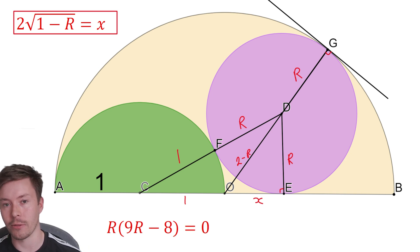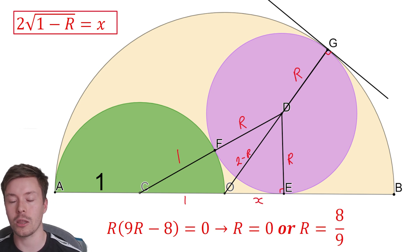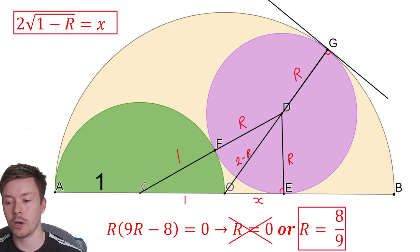Then we're going to factorize out the R, and that will give us two solutions. It will give us either R is 0, or R equals 8 over 9. Now, R being 0 is a bit of a problem and actually can't be true, because if R is 0, then it just wouldn't work, would it? Because then we wouldn't have the green semicircle being half of the yellow semicircle in terms of diameter, and the pink circle wouldn't exist basically. So we can't have that. That means our only actual solution is 8 over 9 units, so the radius equals 8 over 9.